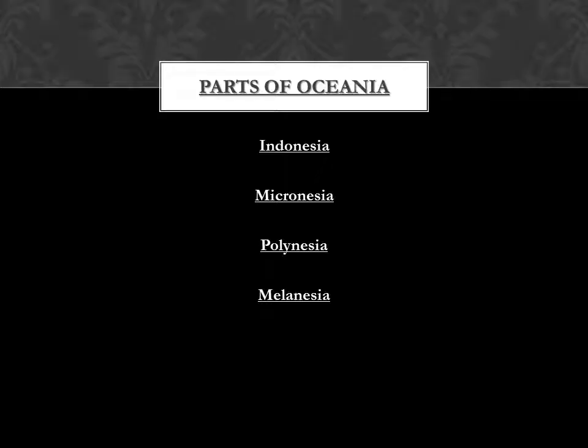So what are the four parts of Oceania? There's Indonesia, Micronesia, Polynesia, and Melanesia. Some people will argue that Indonesia is not part of Oceania, but as long as you're in my class, it is.